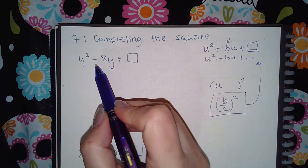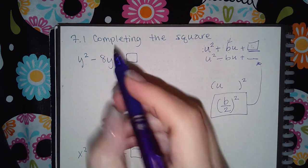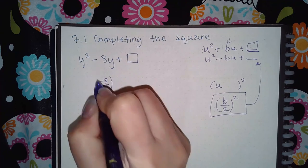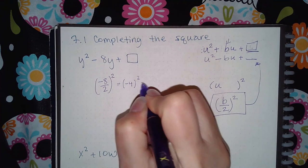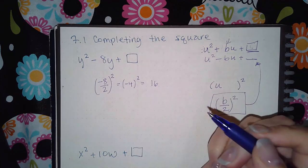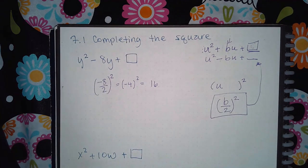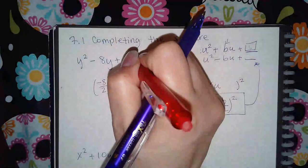So in this case, my B value is a negative 8. So I would take negative 8 over 2 and then square the whole thing. That is negative 4 squared, which is actually positive 16. So positive 16 is what I would be typing in that box.